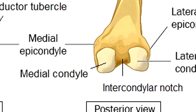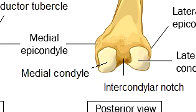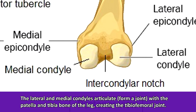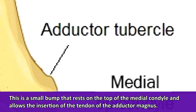The medial epicondyle is located above the medial condyle — hence the prefix epi — and it provides attachment of the adductor magnus and gastrocnemius muscles. The lateral and medial condyles articulate or form a joint with the patella and tibia bone of the leg, creating the tibiofemoral joint. A condyle is a rounded projection on a bone that forms a joint. Next, we have the adductor tubercle, a small bump on top of the medial condyle, which allows for the insertion of the tendon of the adductor magnus.